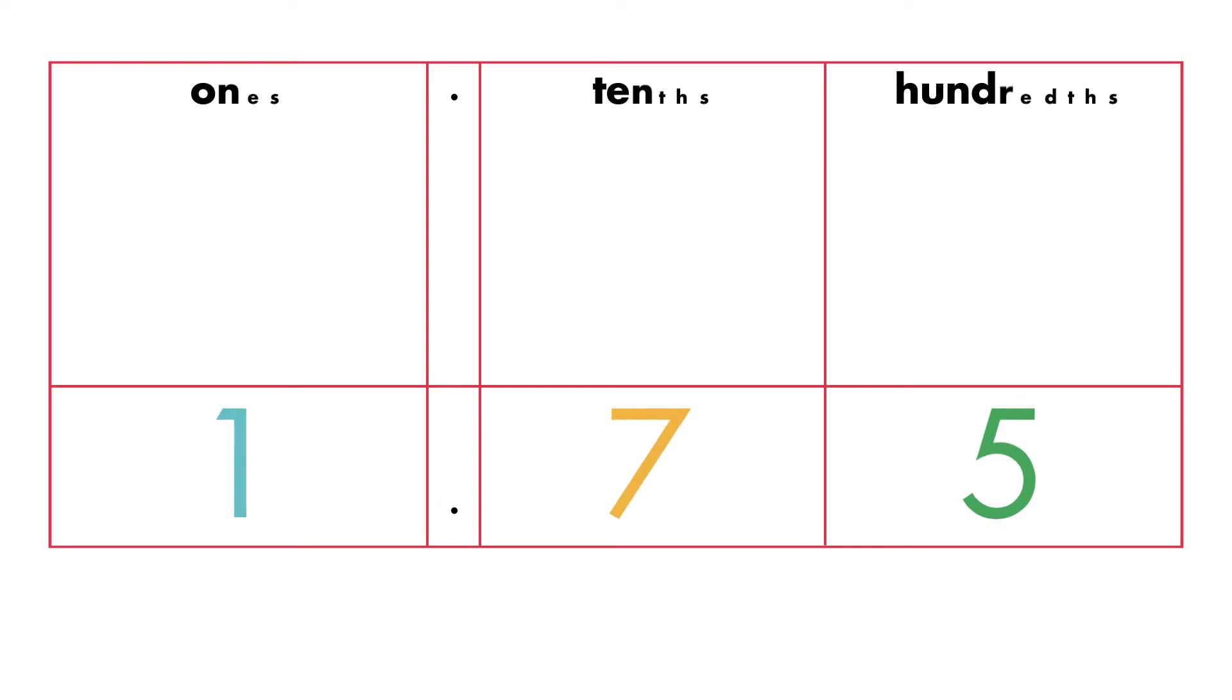We can use place value models to show decimal values. For the number 1 and 75 hundredths, we show the one with a whole unit in the ones place.